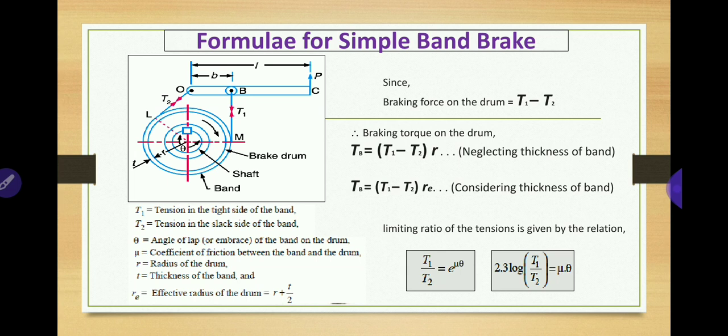To find T1 and T2 — tension in the tight side and slack side — you use two relations. The first is the limiting ratio of tensions: T1/T2 = e^(μθ). In some books this is given in logarithmic form as 2.3 × log(T1/T2) = μθ. We will use the first relation: T1/T2 = e^(μθ).